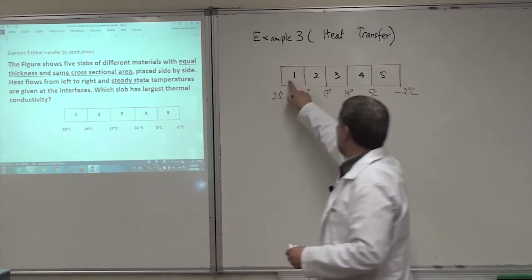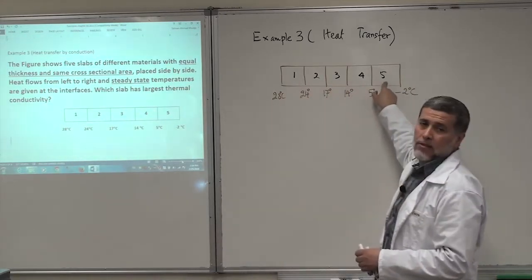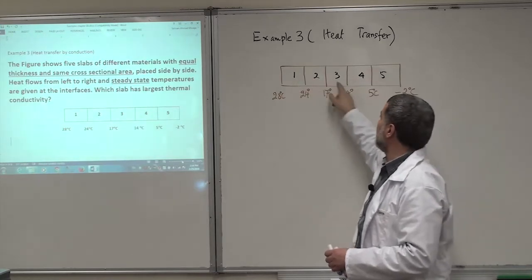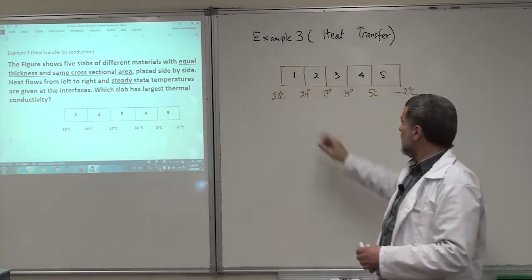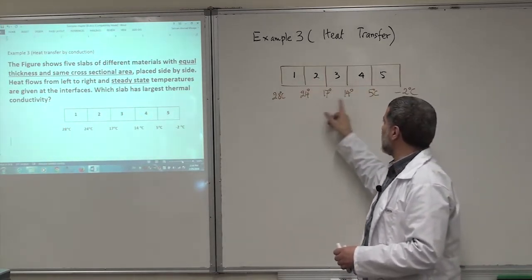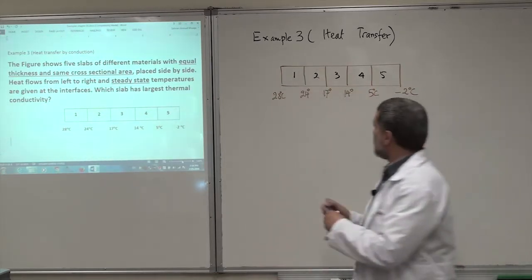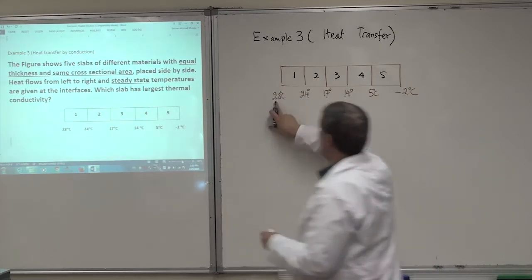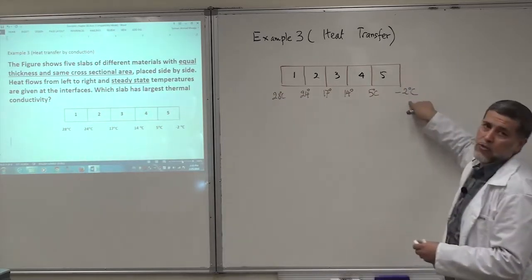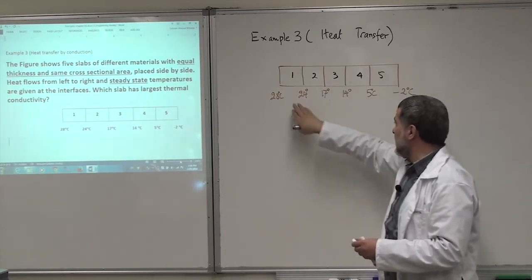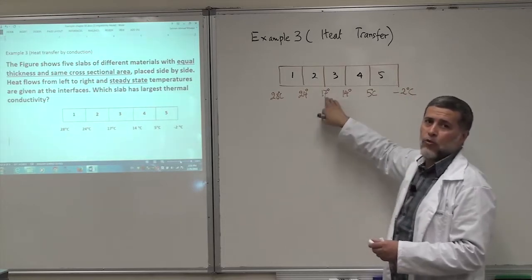It shows you you have five different materials with five different cases. And it's showing you the temperature at the junctions, and it's telling you that this is a steady state. So the temperature of the hot reservoir here is 28, and the cold reservoir is minus 2. And these are, as you can see, temperature is decreasing as you move to the right.